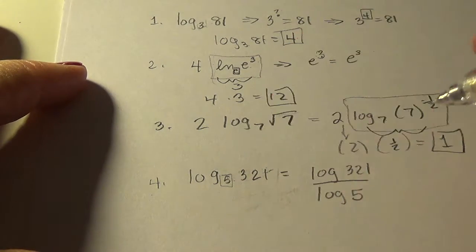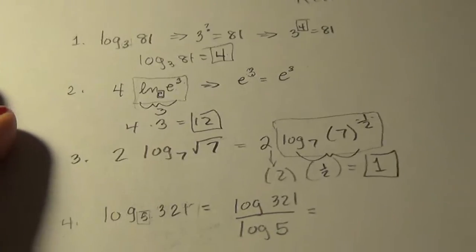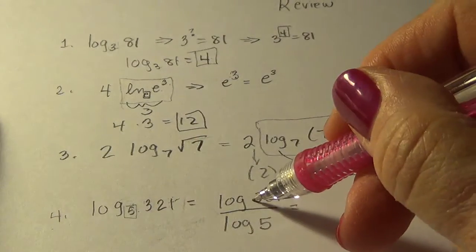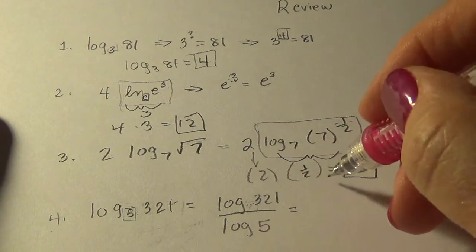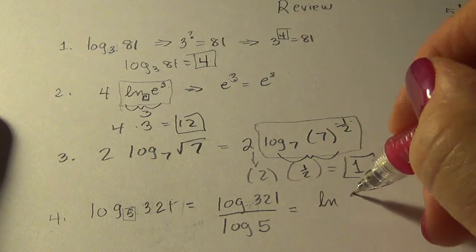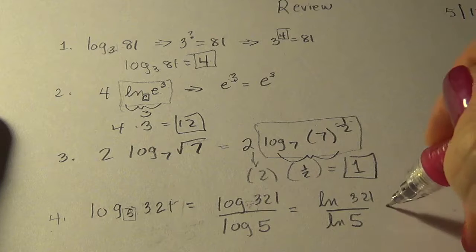So log of the upper number, I call this the upper number, over log of the lower number. And you don't have to use LOG, but you can. So notice this was base five and I'm using base unwritten here, it's base 10. And our calculator does do those. Or I could use LN and I will still get the correct answer.